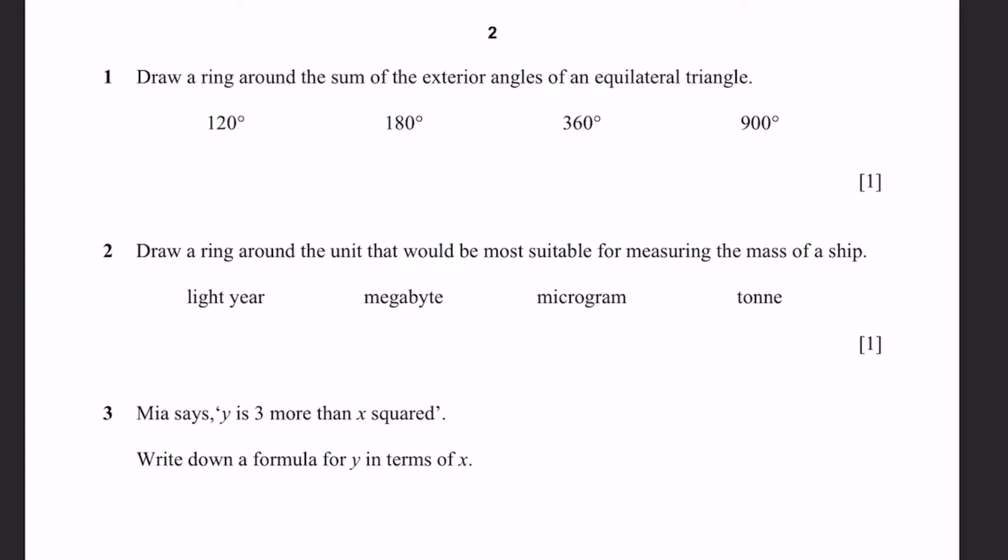Question 1. Draw a ring around the sum of the exterior angles of an equilateral triangle. Since the equilateral triangle is a regular polygon, the exterior angles will have a sum of 360 degrees.